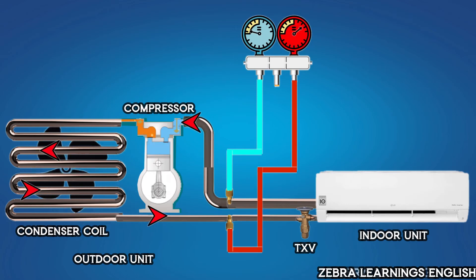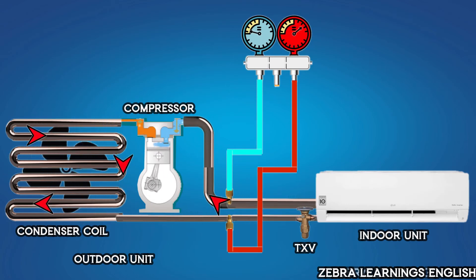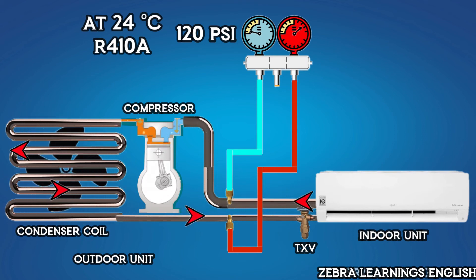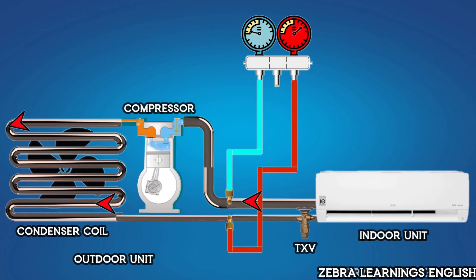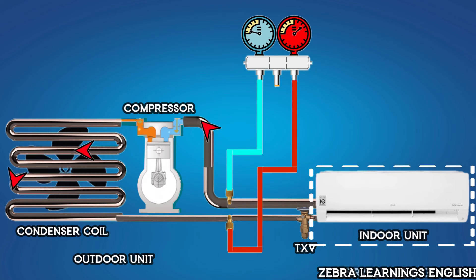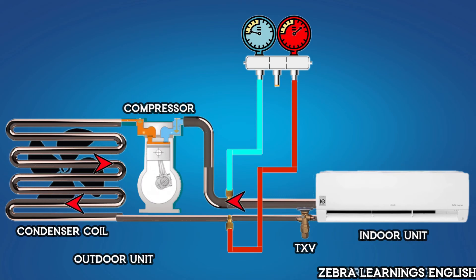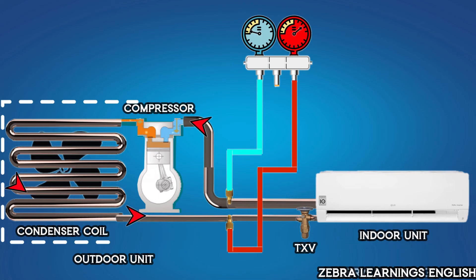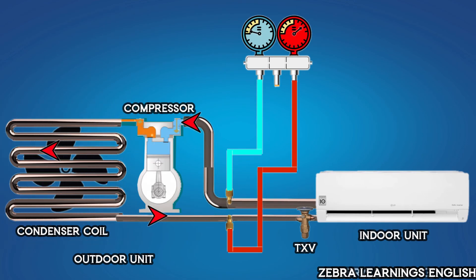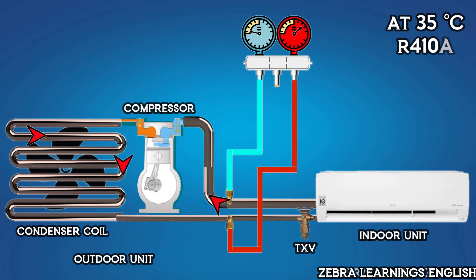When the unit is running, the refrigerant pressure in the suction line is 120 PSI at 24 degrees Celsius. The refrigerant pressure in the suction line comes from the evaporator in the indoor unit. The refrigerant in the discharge line comes from the condenser in the outdoor unit. Refrigerant pressure in the discharge line can be up to 600 PSI at 35 degrees Celsius.